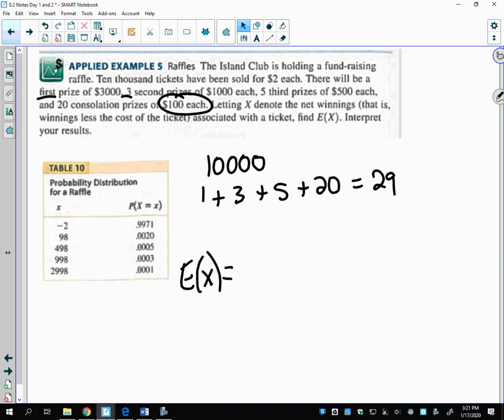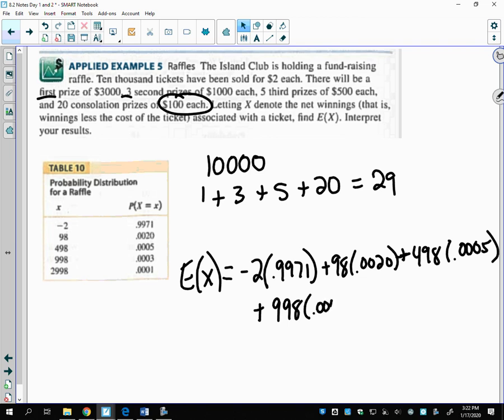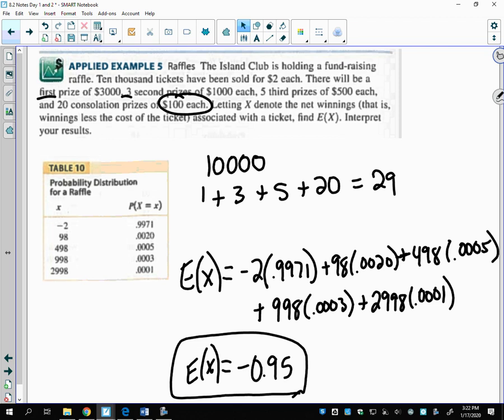If I do the expected value, I'm going to take each of those times the probability. I want to make sure you understand where these numbers are coming from, and then it's just typing it in your calculator. With only one person winning $3,000, do you think we're going to get a positive number or a negative number? Well, when you type this all in your calculator, you get negative $0.95 is your expected value.